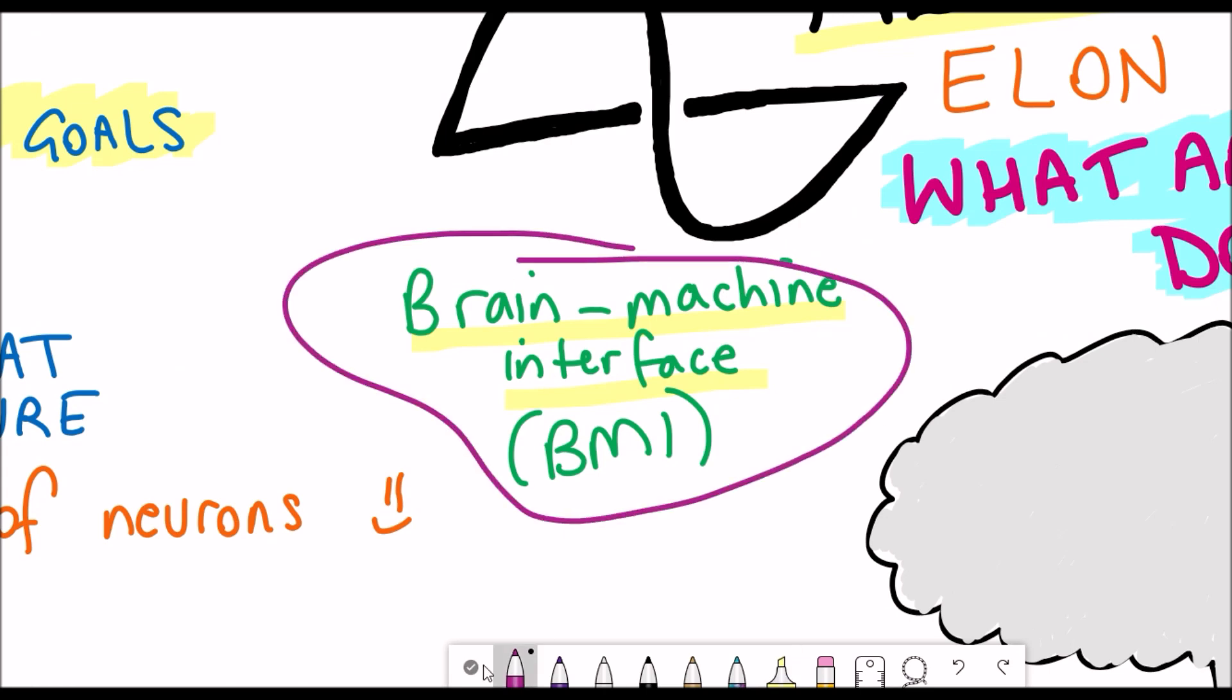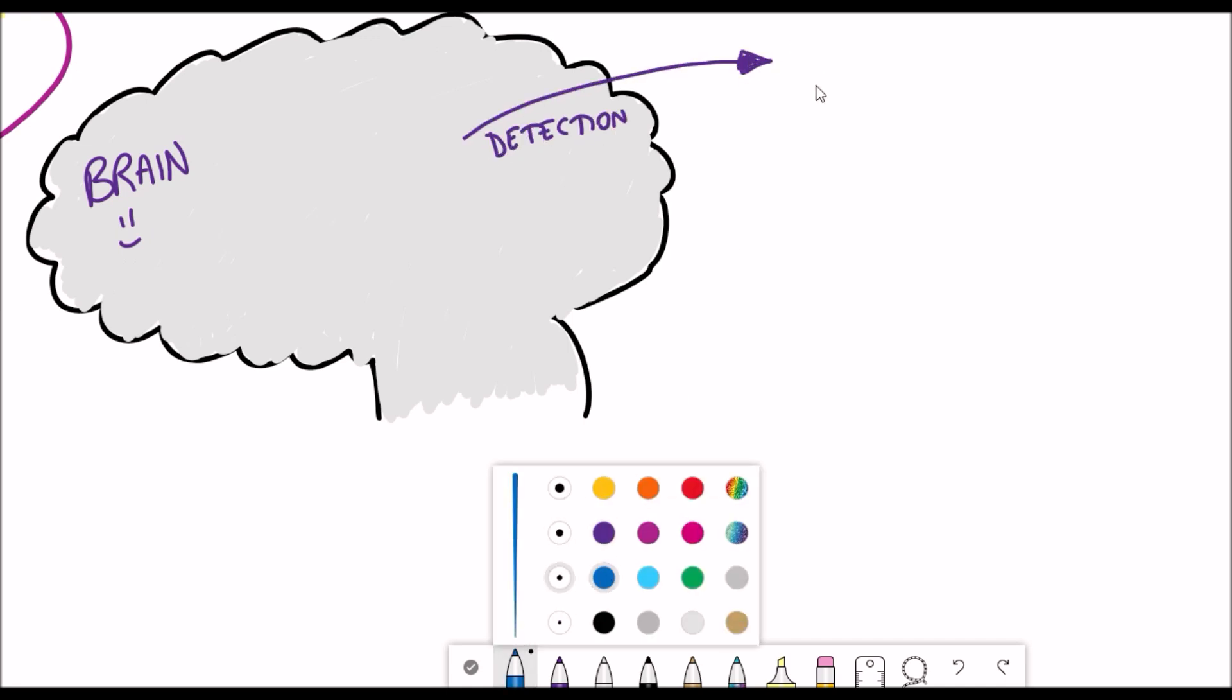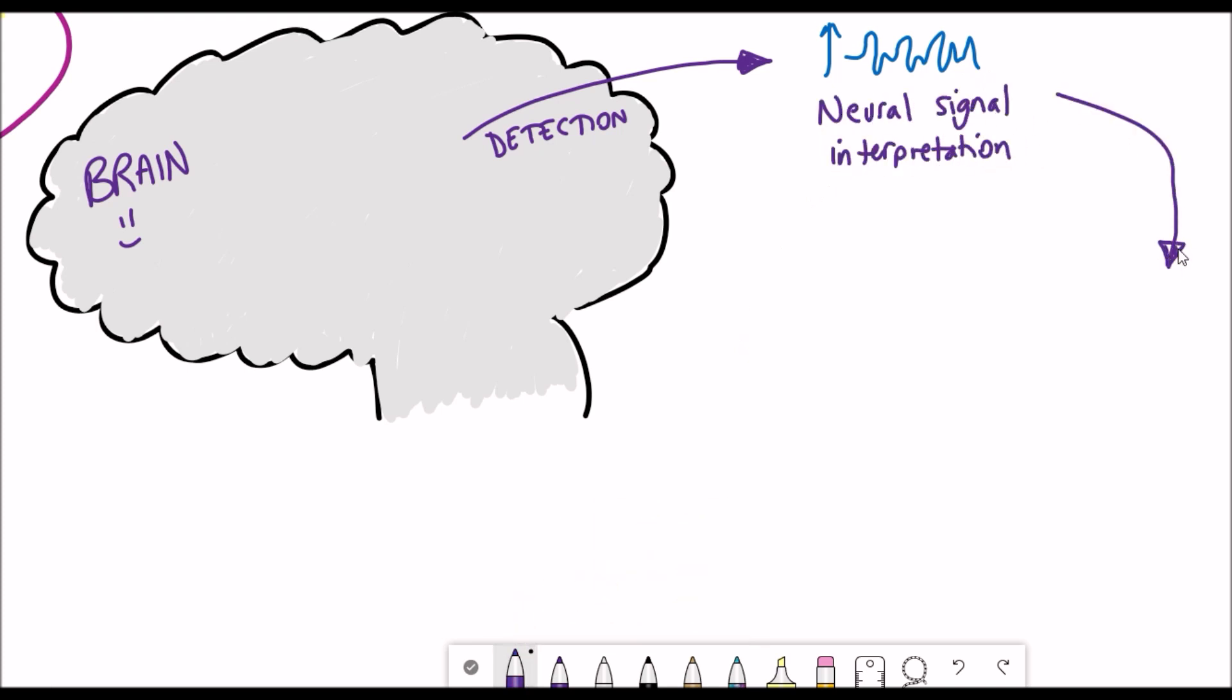The mechanism by which Neuralink wants to treat these disorders is through a brain machine interface. So what exactly does that mean? Apologies for the terrible drawing of a brain but what this means is that initially you need to be able to detect these electrical signals, these spikes that come from the different neurons.